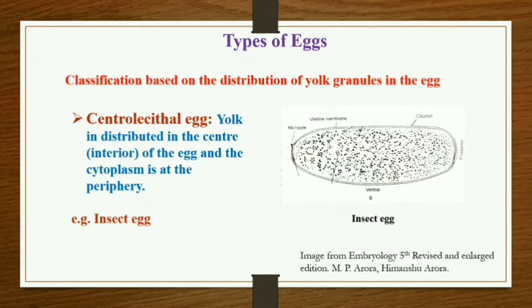The next one is the centrolecithal egg. Here the yolk granules are located in the interior of the cytoplasm. The yolk granules take the central position and are surrounded by the cytoplasm on the periphery. The best example of it is the insect.